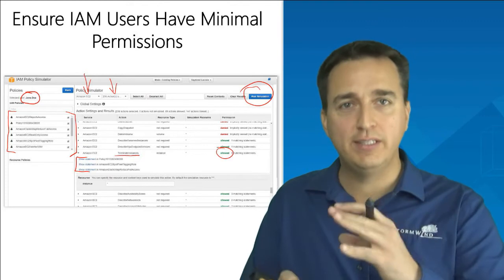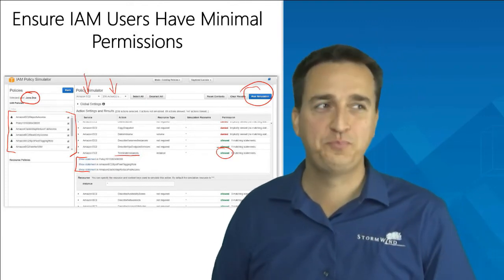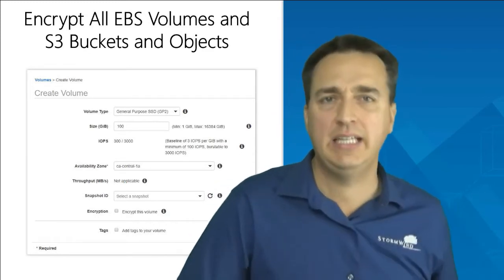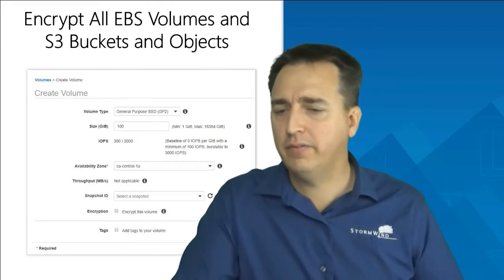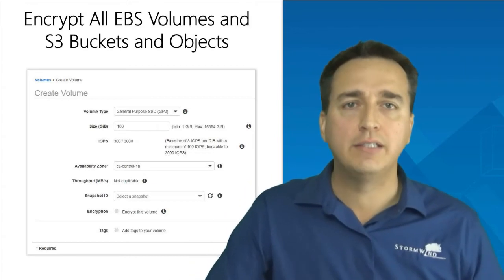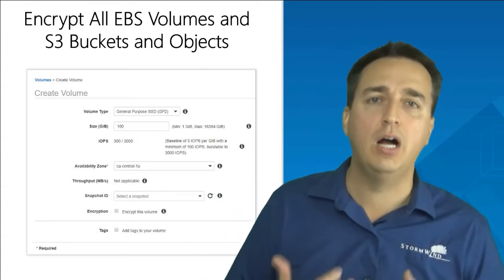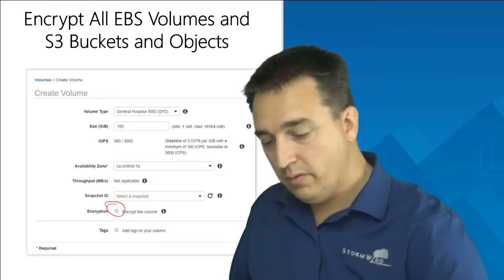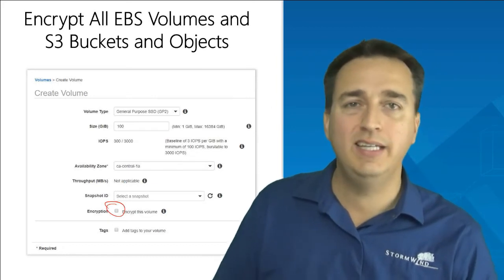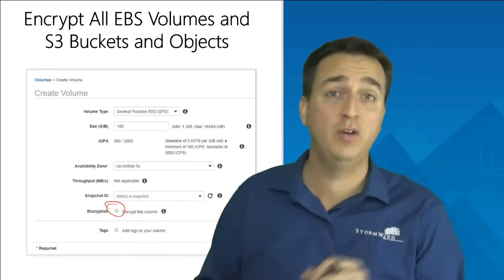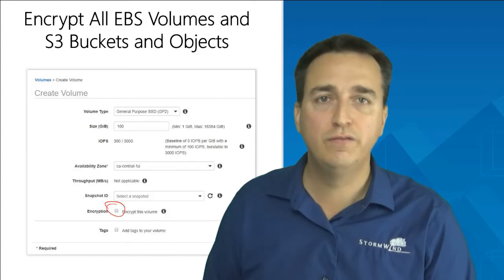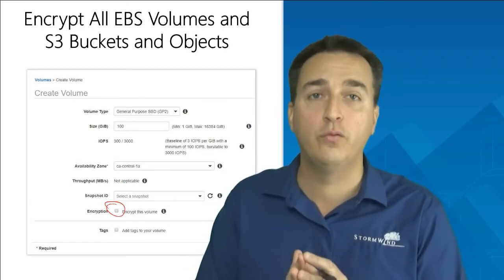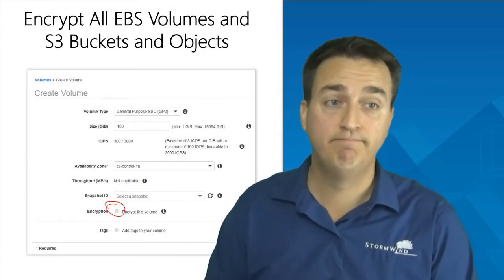Take advantage of the IAM policy simulator — it's a fabulous tool to verify exactly what actions IAM users are allowed to perform given the policies attached to them, reducing your vulnerability to a manageable level. With EBS volumes, we just go to the volume while creating it, click the encryption button, and choose which keys to use — the default keys, so I don't have to do anything else, or a custom key we created. Very simple to encrypt all information on an EBS volume, and it also encrypts information in transit from an EC2 instance to the EBS volume.